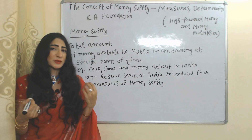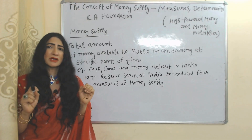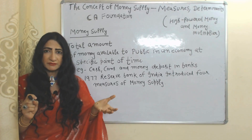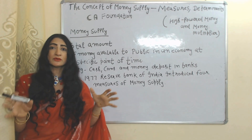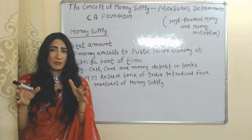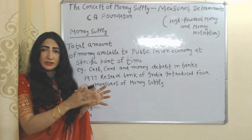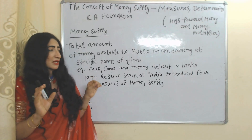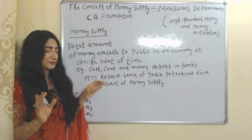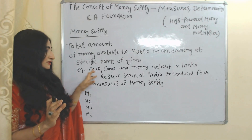What do you mean by money supply? Money supply means the total amount of money which is available to the public during a specific time period — like cash, coins, and money deposited in banks. During 1977, the Reserve Bank of India introduced four measures of money supply.